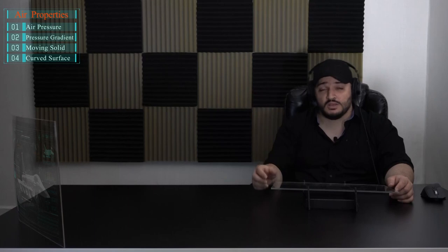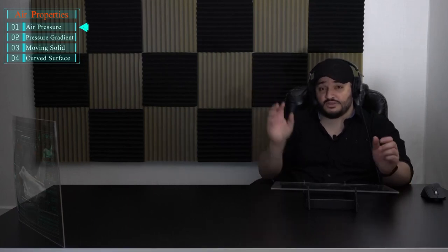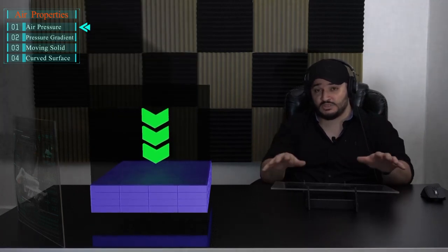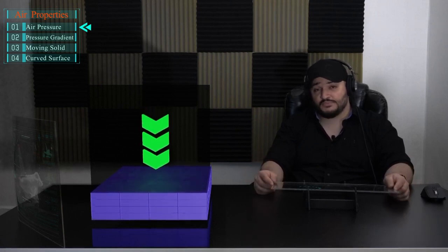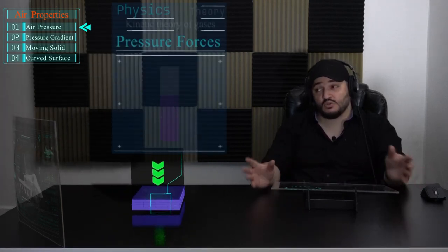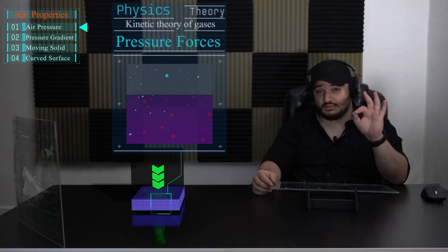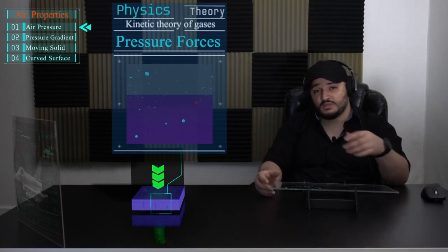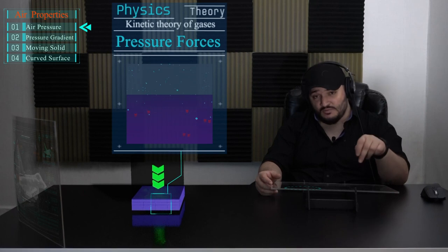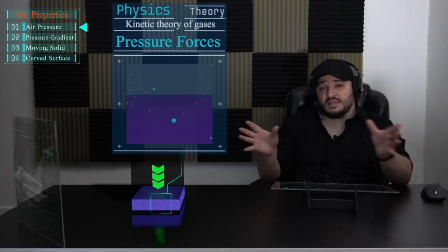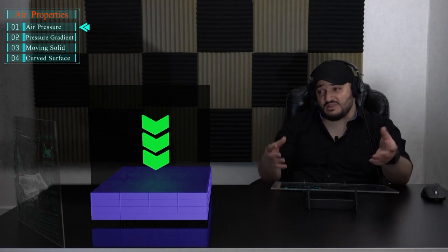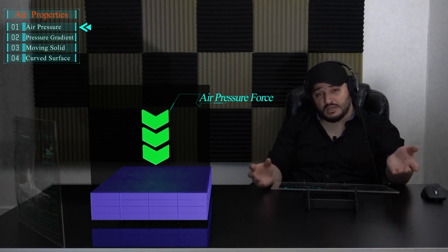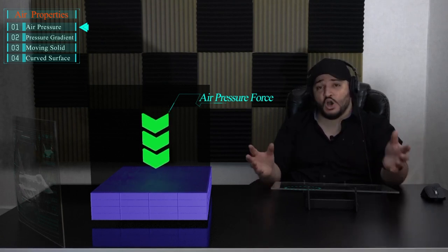The first principle: air can exert pressure forces on solid surfaces and objects. Air is formed from a large number of small particles, all of which are in rapid, random, and continuous motion. Each time one of those particles collides with a surface, it exerts a small force on it. If we sum and average all these forces, we get the average pressure force. Dividing this by the surface area gives us air pressure.